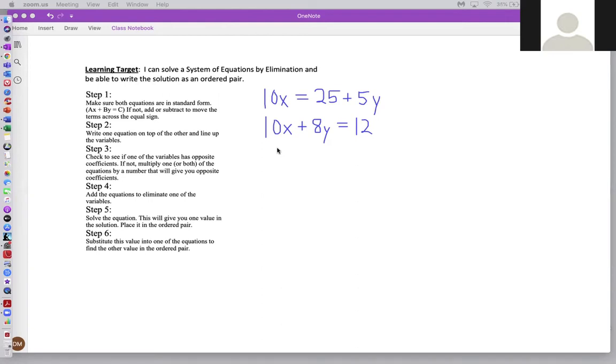If you said put the first equation 10x equals 25 plus 5y in standard form, then give yourself a pat on the back. That is absolutely right. So I'm going to go ahead out to the side here. I'm going to rewrite that equation 10x equals 25 plus 5y. Because it is not in standard form, I need the y term on the left hand side of the equal sign. To accomplish that, I'm going to subtract 5y from both sides.